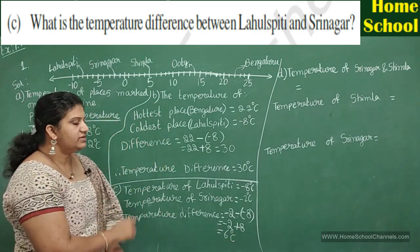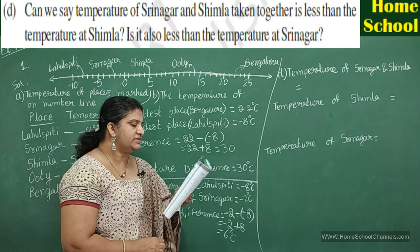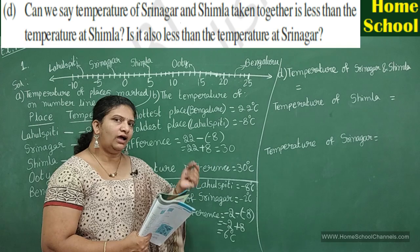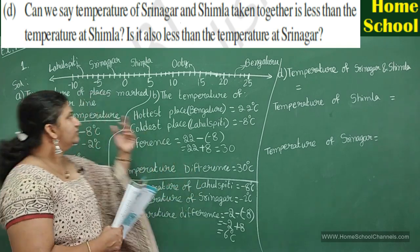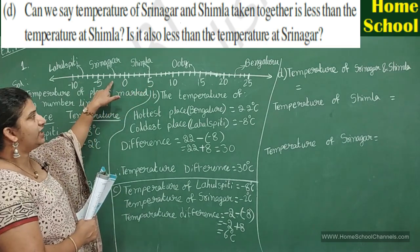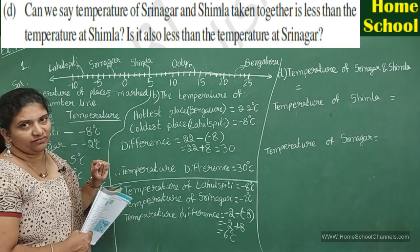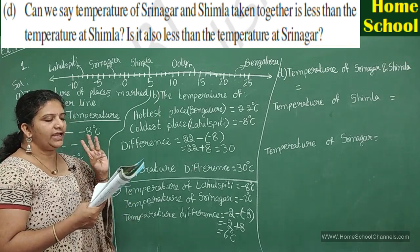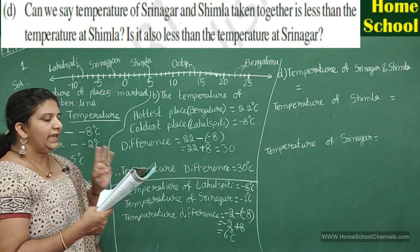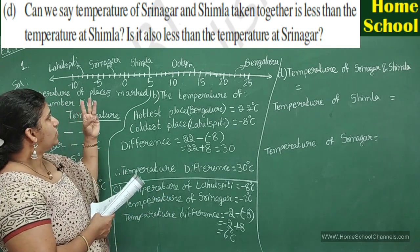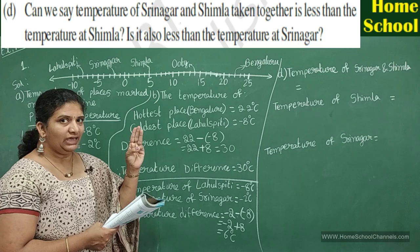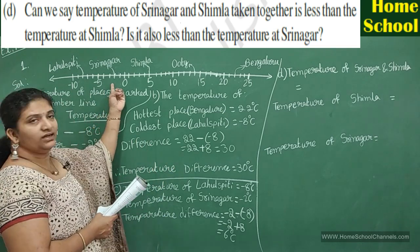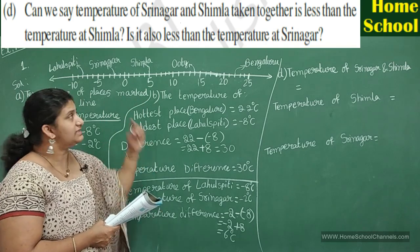Coming to the last question: can we say the temperature of Srinagar and Shimla together is less than the temperature of Shimla? Srinagar is minus 2 and Shimla is 5, so their sum is minus 2 plus 5 equals 3 degrees Celsius. Is 3 less than 5? Yes. So the sum of Srinagar and Shimla temperatures is less than Shimla's temperature — yes.